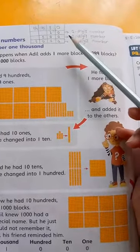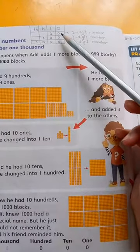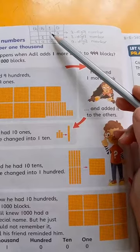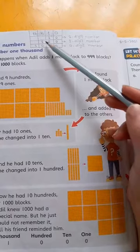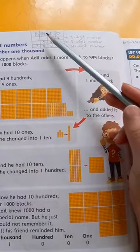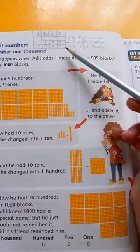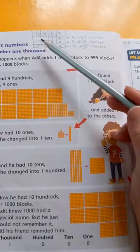In sab mein aap na cheez note ki hogi, ke jo two digit number hai, woh kahan tak approach kar raha hai? Tens tak. It goes up to hundreds and the four-digit number goes up to thousands.